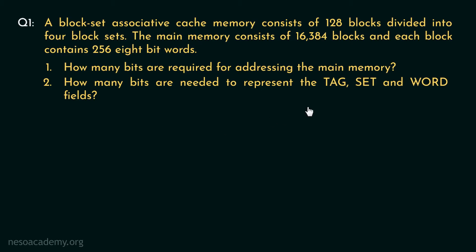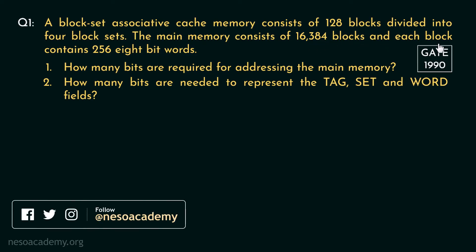Consider question number 1 — it came in the GATE 1990 paper. The question states: a block set associative cache memory consists of 128 blocks divided into 4 block sets. The main memory consists of 16384 blocks and each block contains 256 8-bit words. Now we will solve these questions one after another, but first let's try to extract the information provided in the problem statement.